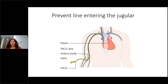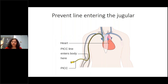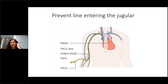Lines from the hand tend to go up into the jugular. To prevent this, turn the baby's head to the same side as where you're inserting the line — this closes off the straight path to the jugular. Turning the head away from the insertion side creates a straight path and the line will go up. So ensure the baby's head faces the same direction as the line to direct it back towards the superior vena cava and into the heart.